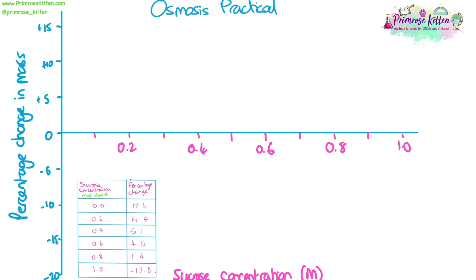I have drawn my graph with sucrose concentration on the x-axis. Because we're doing a plus-and-minus graph we have cross axes, going up for positive increase in mass and down for negative decrease in mass, with zero in the middle — going from minus 20 to plus 20. My first point for zero molar at 17.4% is plotted on the y-axis, then 14.4 just below 15, then 5.1 just above 5, then 4.5 just below 5, then 1.4 almost at 2, and then minus 17.